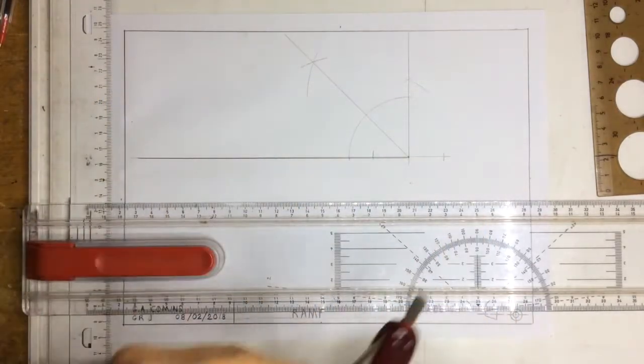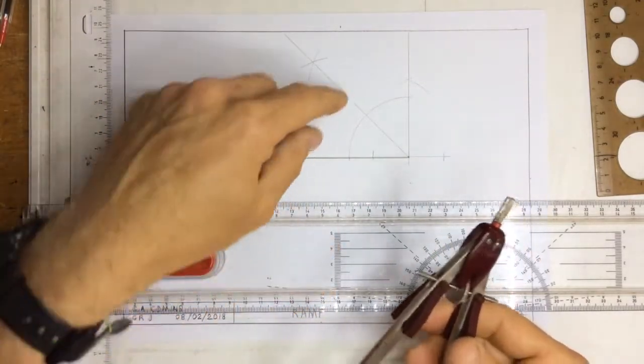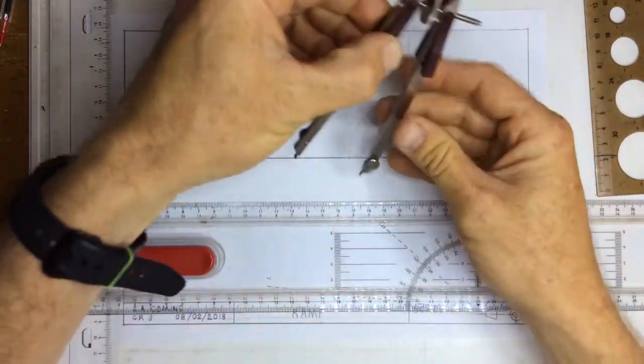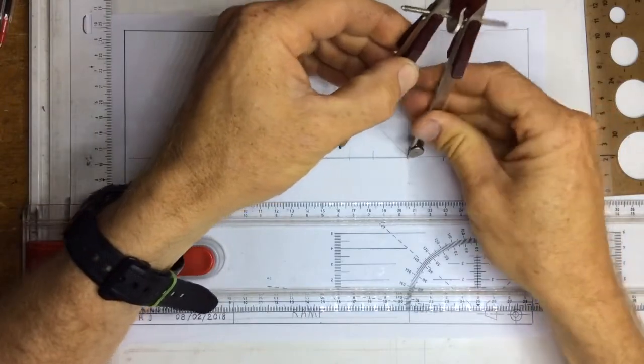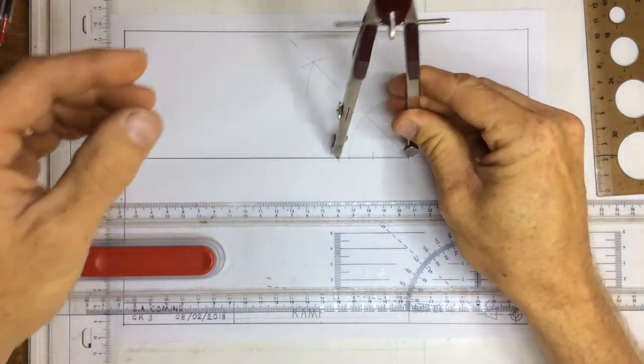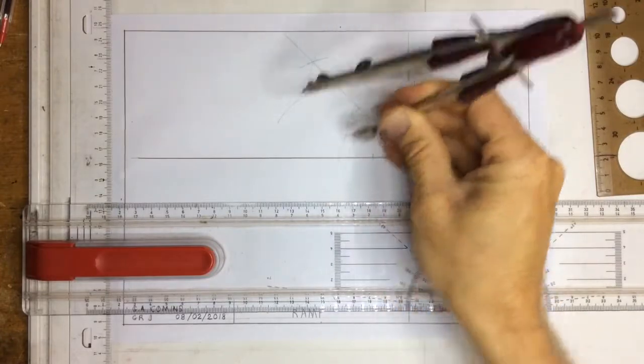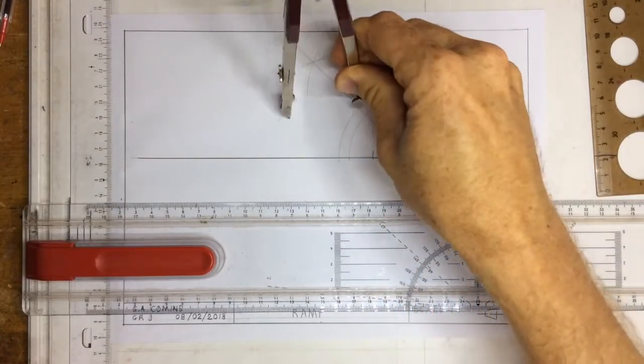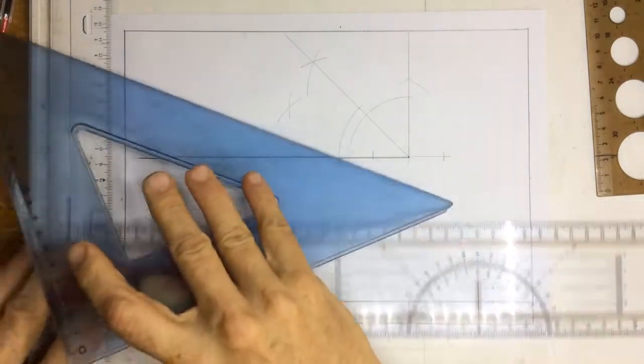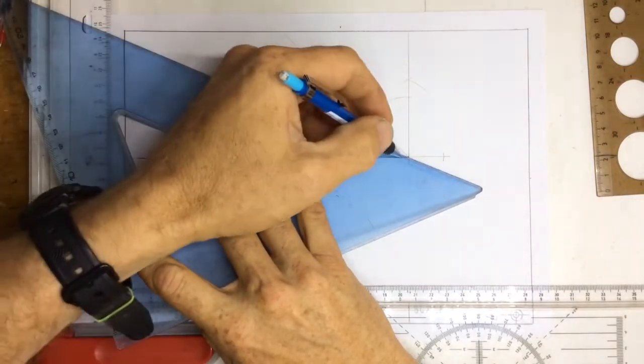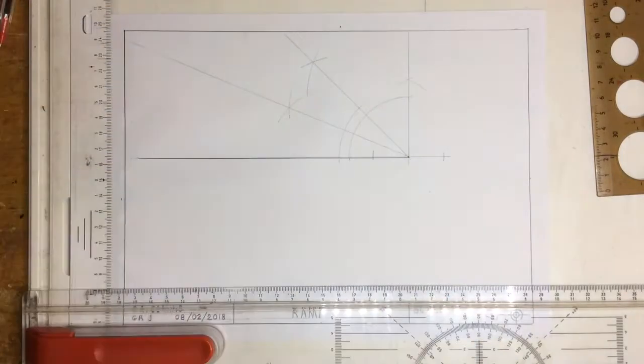The next thing that we need to do is to bisect that 45 degrees to get the 22.5 degrees. So, I can set my pair of compasses, make a small arc between those two, take the pair of compasses like that, make a small arc there, go up there, make a small arc there and that will give me a line going at 22.5 degrees. Construction line.